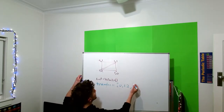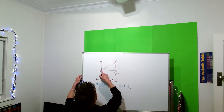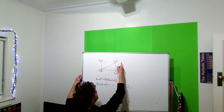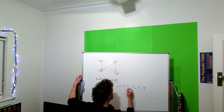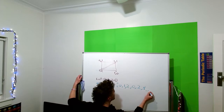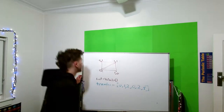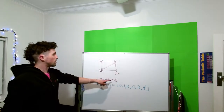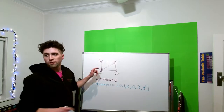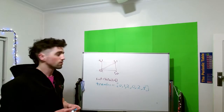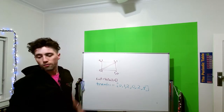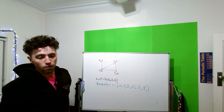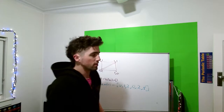And then you keep going: 0, 2, 3 — that's the second triangle. So now you've got your list of Vector2s, which is four separate Vector2s, and then your list of triangles, which is just the indices of those vertices.